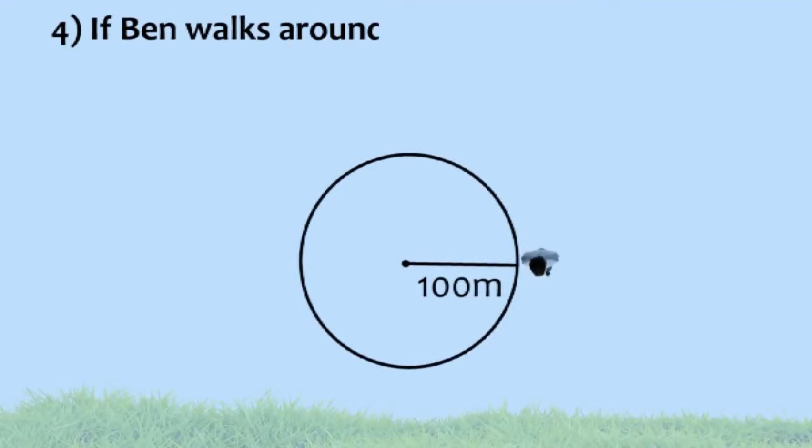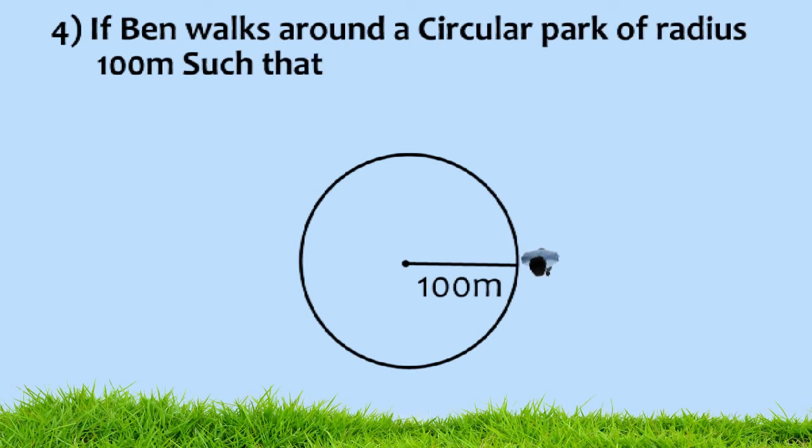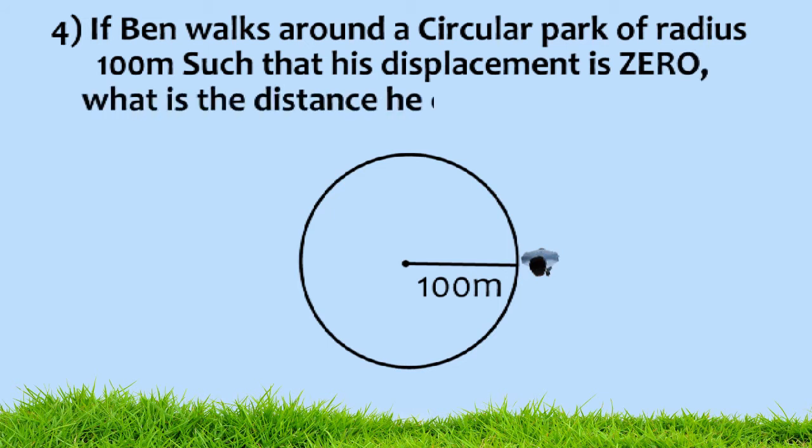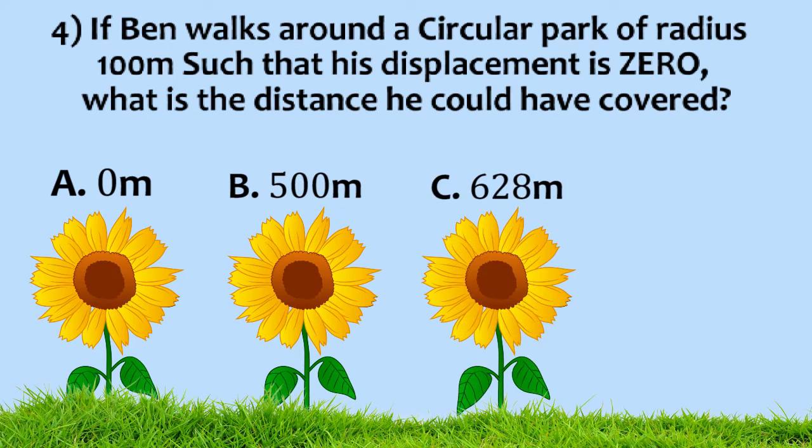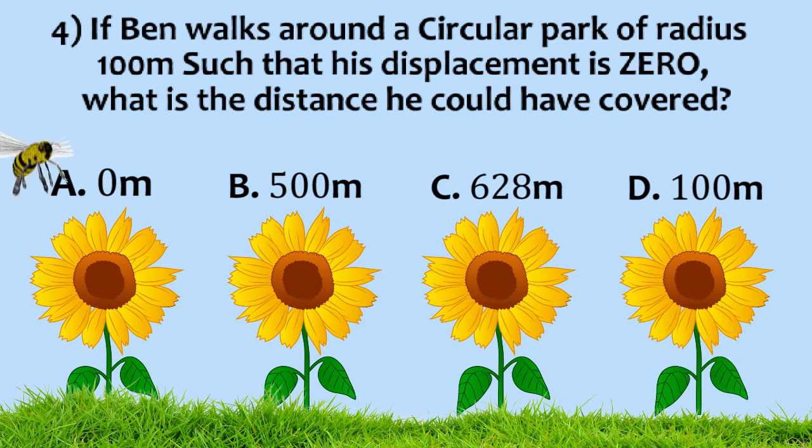If Ben walks along a circular path, having a radius of 100 meters, such that his displacement is zero, what is the distance he could have covered? 0 meters, 500 meters, 628 meters, 100 meters.